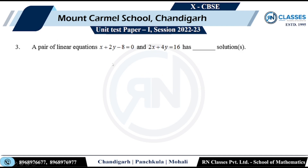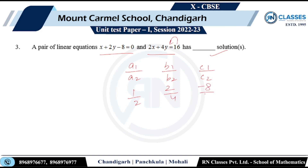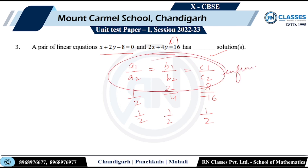Now he says a pair of linear equations — have how many solutions? Let me check how a1/a2, b1/b2, and c1/c2 are related. So a1/a2 is 1/2, b1/b2 is 2/4 which is 1/2, and c1/c2 is -8/-16 which is 1/2. That means a1/a2 equals b1/b2 equals c1/c2 — the condition for infinite solutions because the lines are coincident.